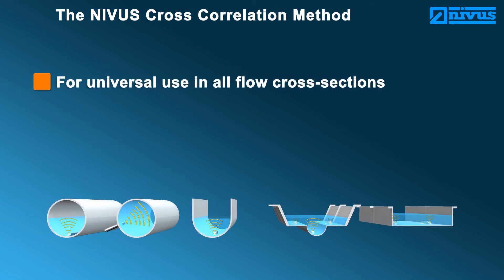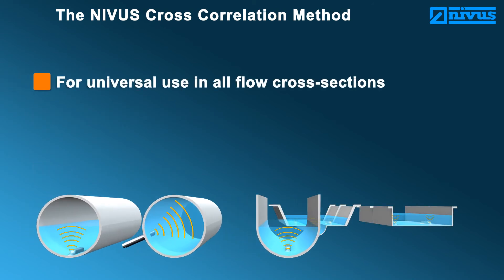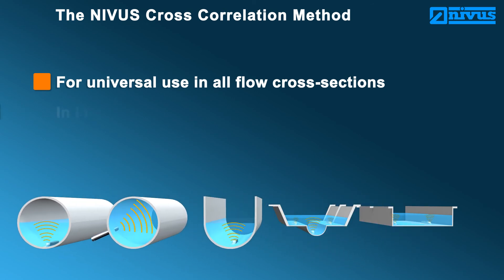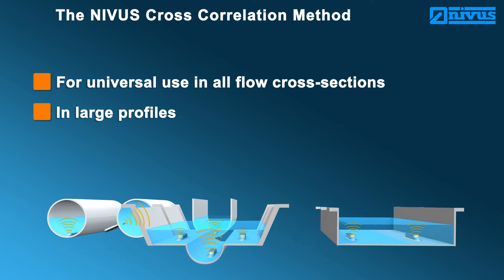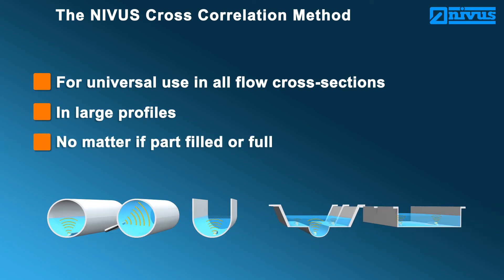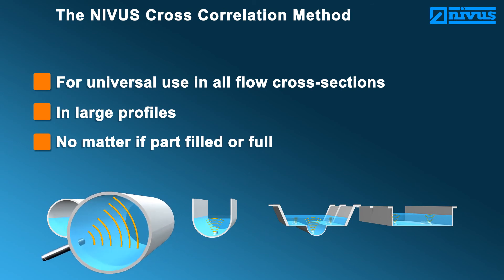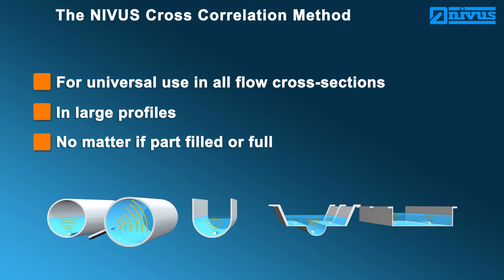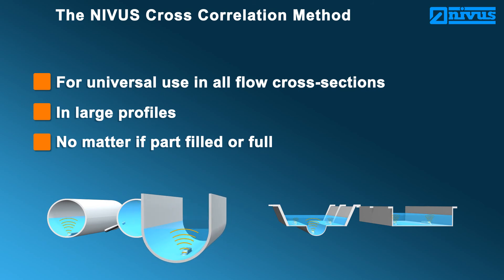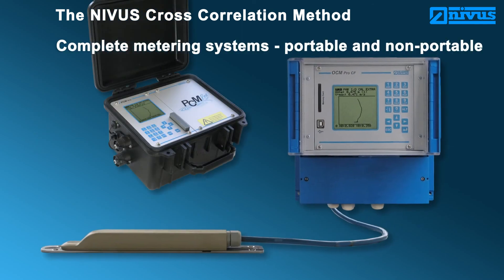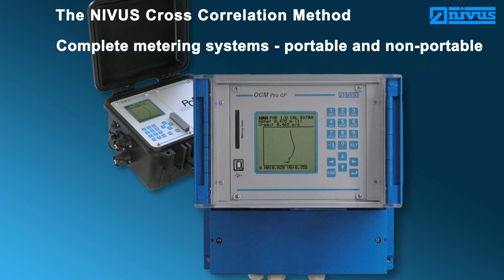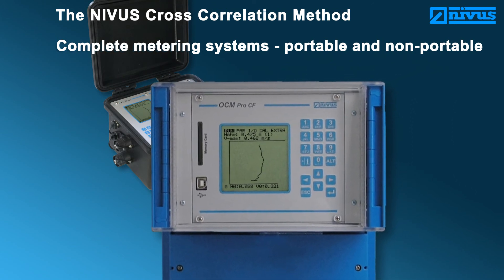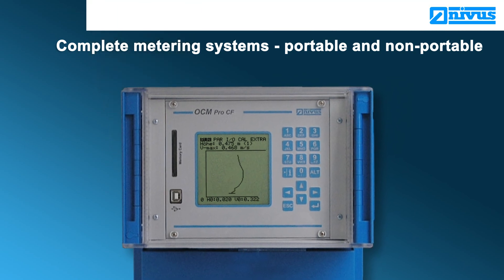Our measurement system is for universal use in all flow cross-sections, including large profiles, whether part-filled or full. Portable and non-portable metering systems — NIVUS provides the perfect solution for each application. Our innovative systems stand for highest accuracy and reliability.